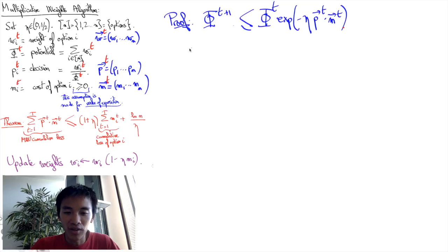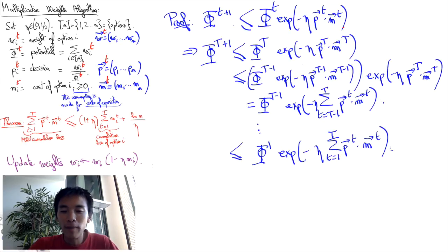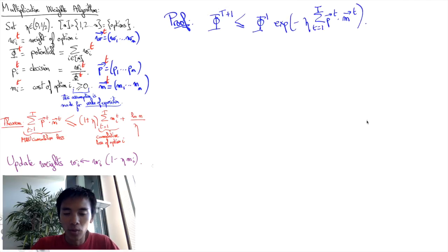By induction on t rounds, we obtain the inequality phi at time T+1 is at most phi at round 1 times the exponential of minus eta times the sum of the scalar product between mt and pt over round t. In other words, that's the sum of all mti times pti over all round t and all options i. Now we know that phi at round 1 was the sum of all weights and all weights were initialized at 1, so this is equal to n, and then we can interpret this other term here as being the exponential of minus eta times the cumulative losses.